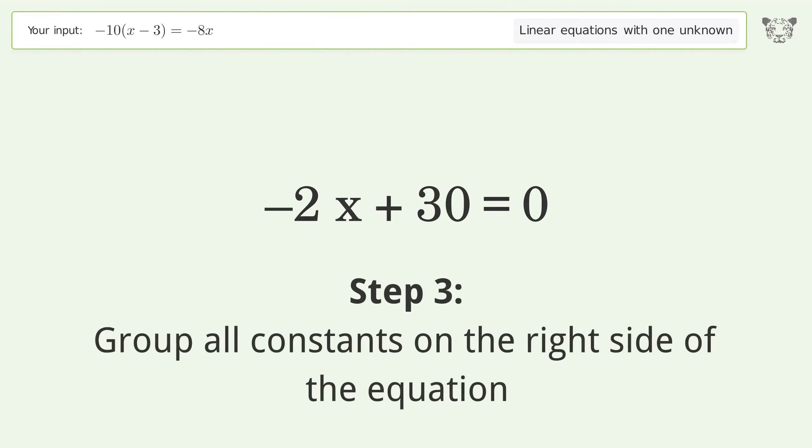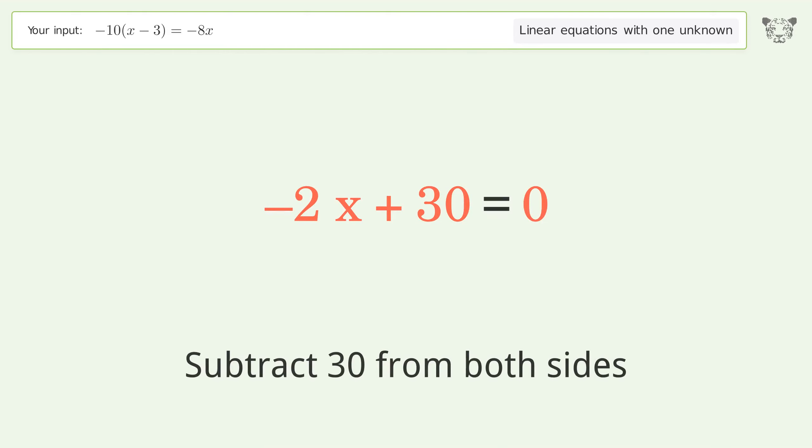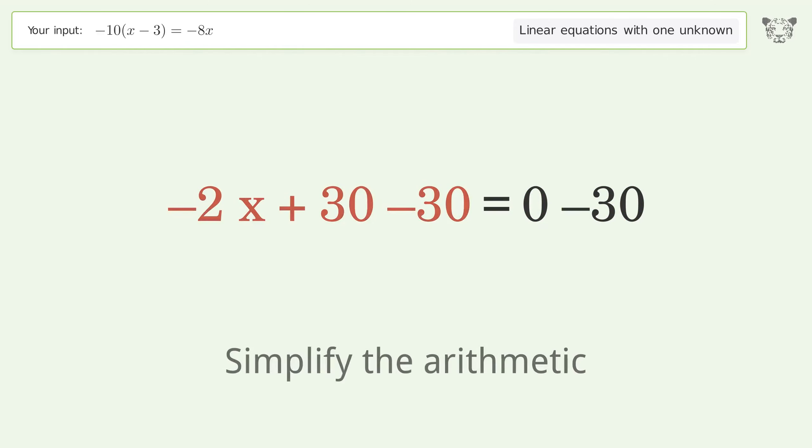Group all constants on the right side of the equation by subtracting 30 from both sides, then simplify the arithmetic.